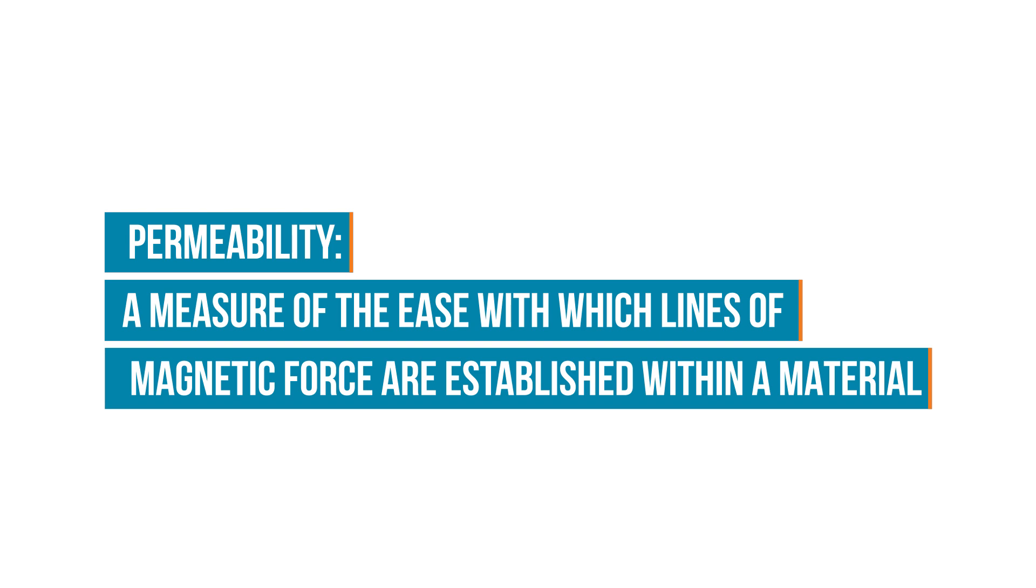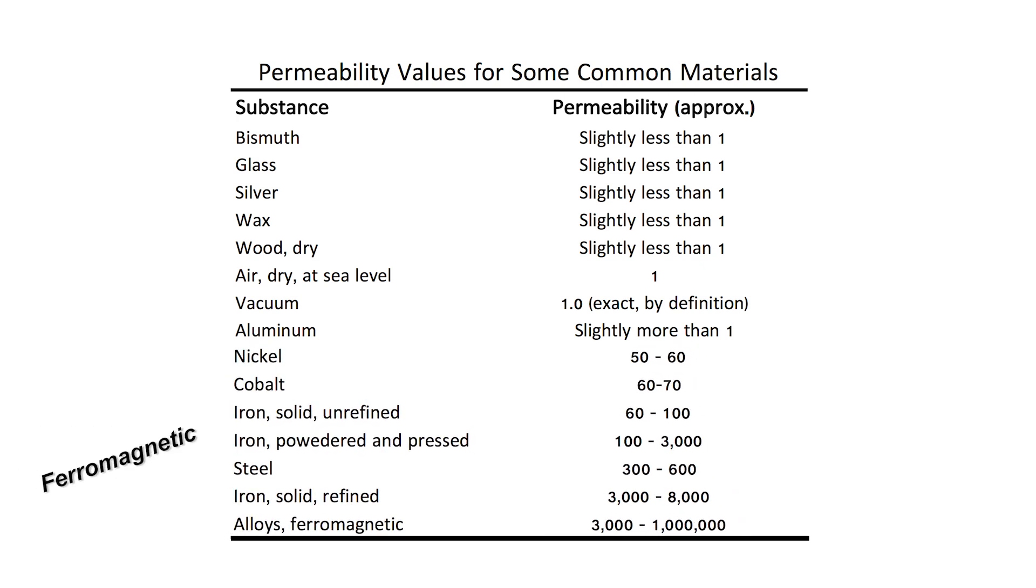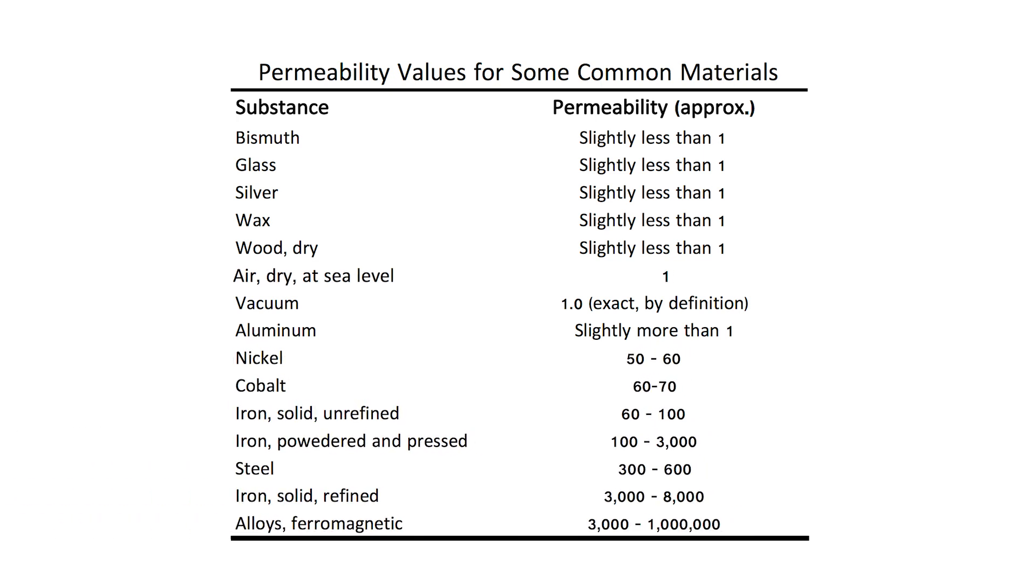Permeability is a measure of the ease with which lines of magnetic force are established within a material. A material's permeability is usually measured relative to the permeability of free space. A substance that causes flux lines to bunch together more tightly than free space would be ferromagnetic. Ferromagnetic materials include iron, cobalt, and nickel. Free space has a rating of 1.